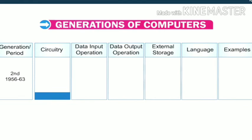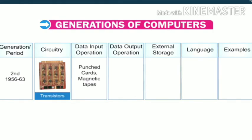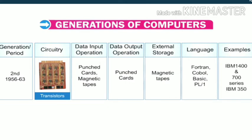Second generation computers, from 1956 to 1963, had circuitry of transistors. Data input was through punched cards and magnetic tapes, and output was through punched cards. External storage was on magnetic tapes. Languages used included FORTRAN, COBOL, BASIC and PL/1. Examples include IBM 1400, IBM 700 series and IBM 350.